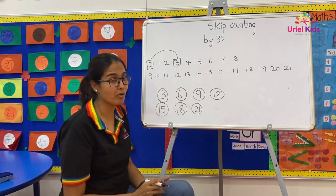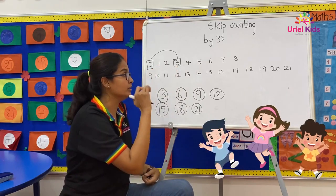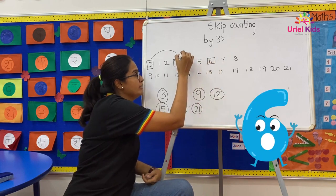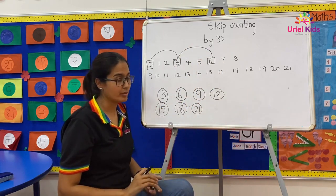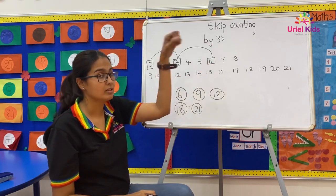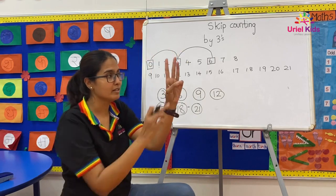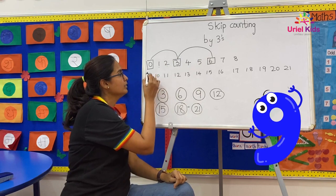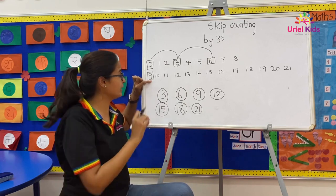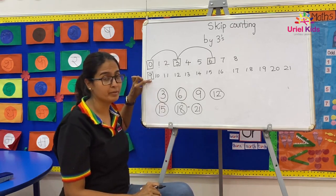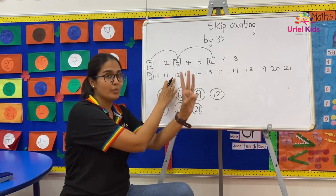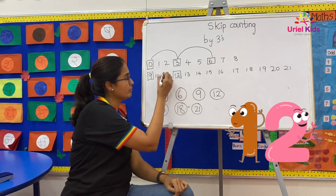Now I am standing on number three. I will jump on the third number from here: four, five, six — so I will directly jump on number six. Now standing on number six: seven, eight, nine — I have to jump on number nine. By hopping and jumping I have reached number nine. So now I will be jumping on the third number: ten, eleven, twelve — I will be jumping on number twelve.